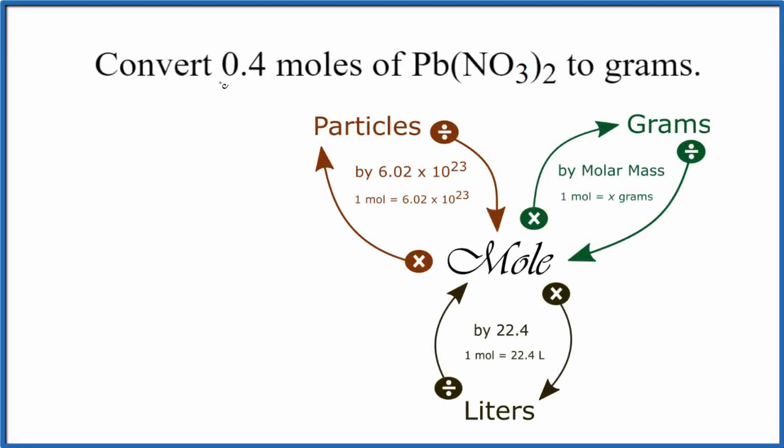In this video, we'll convert 0.4 moles of Pb(NO3)2 to grams. This is lead nitrate.